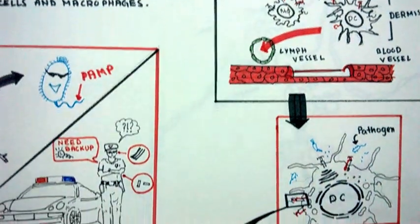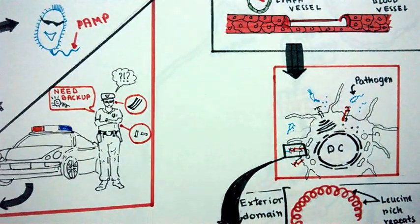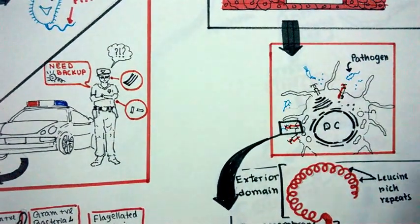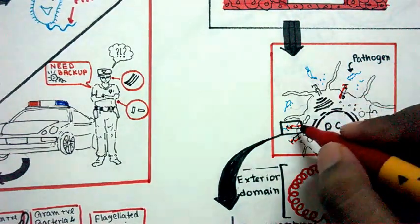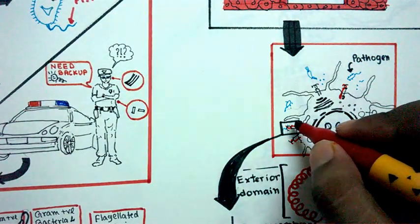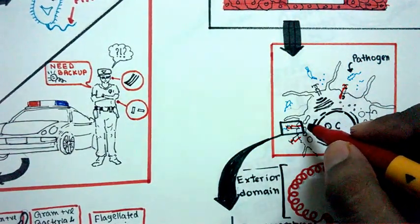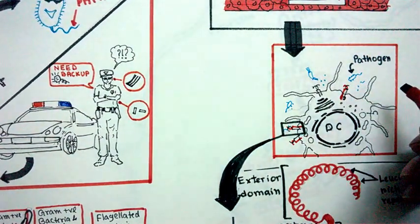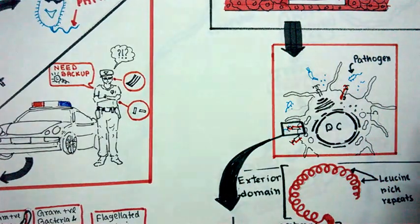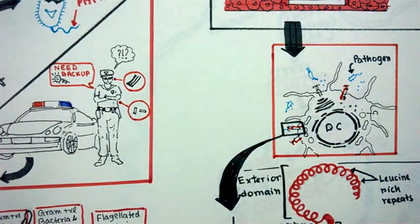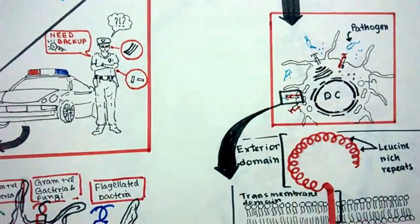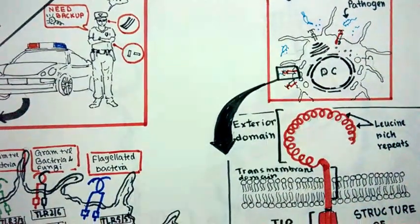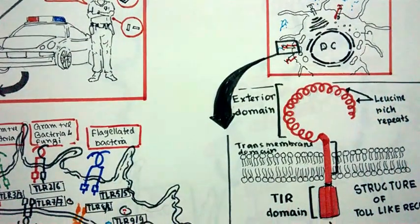Now let's look at details about toll-like receptors and zoom into the surface of the dendritic cell. Once we zoom in, we can see there are many pathogen recognition receptors that look like question marks. They're represented this way because their crystallographic structure is quite similar to a question mark.